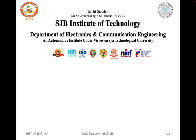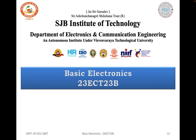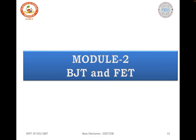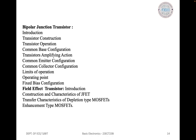Hello everyone, welcome to the course on Basic Electronics, subject code 23 ECT23B. I am Omayas, assistant professor, department of ECE. In this session we will discuss module 2, that is BJT and FET. The content includes: bipolar junction transistor, introduction to transistor, construction, operation, common base configuration, common emitter configuration, common collector configuration, and limits of operation.